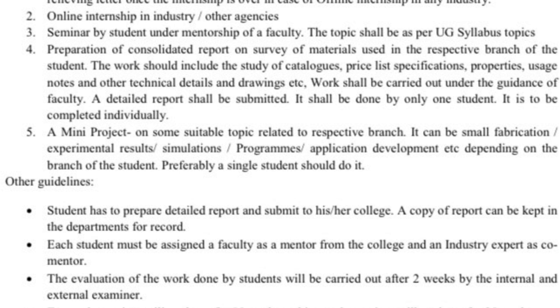The fifth option is a mini project on a suitable topic related to the respective branch. It can be small fabrication, experimental results, simulations, programs, application development, etc., depending on the branch. For chemical engineering, this could involve building a small lab-scale equipment, using simulation software, conducting experiments, writing programs, or developing applications. It is again a small project that you will work on with four hours of practical per week, under a particular guide. It is preferably to be done by a single student.